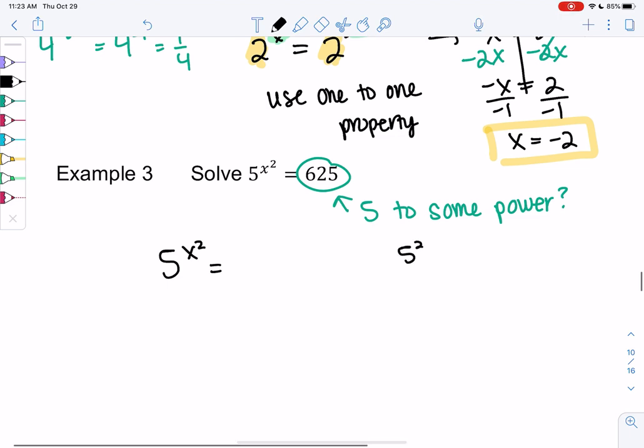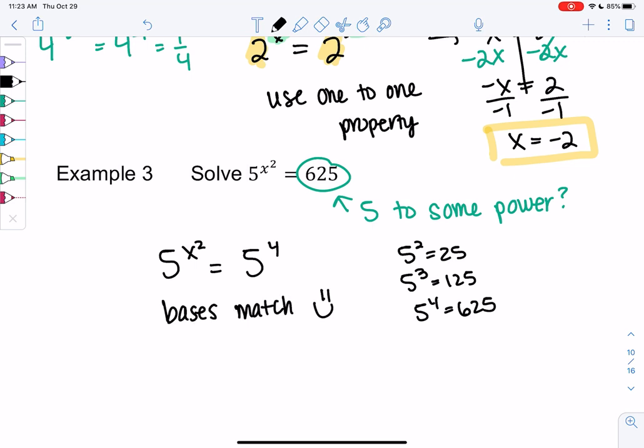So we have 5² is 25, 5³ is 125, and it turns out that 5⁴ is 625. So I'm going to rewrite 625 as 5⁴. And now that my bases match, that makes the equation nice and easy. So we'll just say x² equals 4.